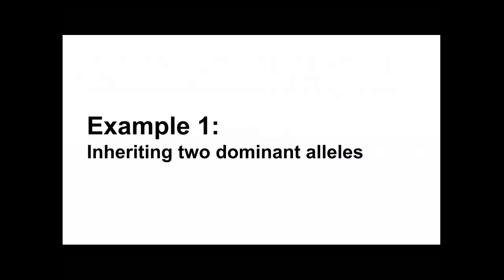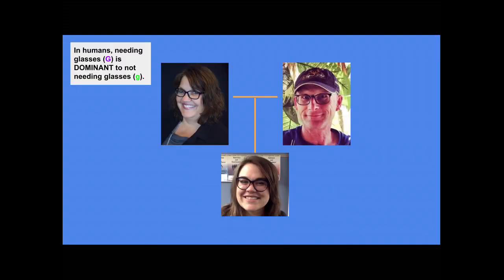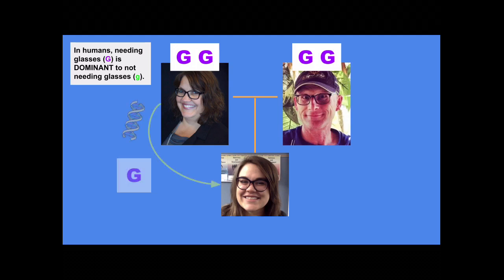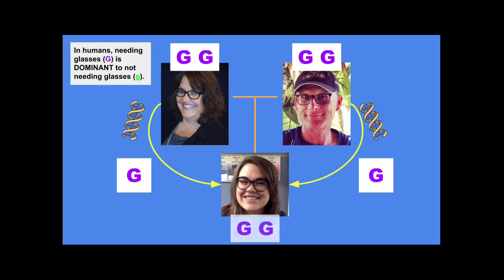Now we're going to practice using those same examples but with genotypes. First: inheriting two dominant alleles. In humans, needing glasses (uppercase G) is dominant to not needing glasses (lowercase g). My mom has the trait of needing glasses, so her genotype is GG. My dad also needs glasses, so his genotype is GG. My mom passes me a big G, my dad passes me a big G. So my genotype is GG, and I need glasses.